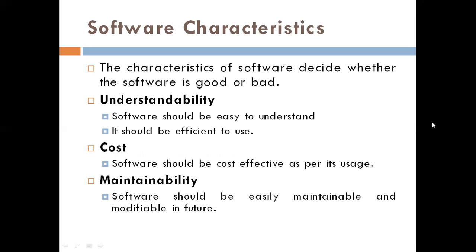Next is software characteristics. The characteristics of software decide whether the software is good or bad. The first characteristic is understandability — software should be easy to understand and efficient to use. The second is cost — software should be cost effective as per its usage. Third is maintainability — software should be easily maintainable and modifiable in the future.